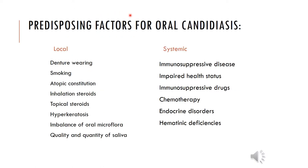Predisposing factors for oral candidiasis: it is difficult for a healthy person to exhibit oral candidiasis. Local factors include denture wearing, smoking, atopic constitution, inhalation steroids, topical steroid use, hyperkeratosis, imbalance in oral microflora, or altered quality and quantity of saliva. Systemic factors include immunosuppressive disease, impaired health status, immunosuppressive drugs, chemotherapy, endocrine disorders, or hematinic deficiencies such as blood deficiencies.